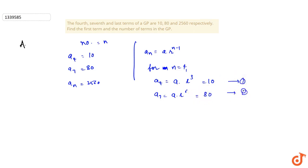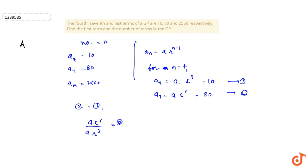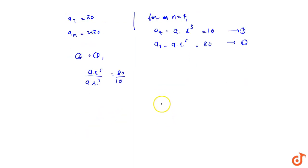Now we have equations 1 and 2. Dividing equation 2 by equation 1, we get a times r to the power 6 divided by a times r to the power 3, equal to 80 divided by 10. This implies r to the power 3 is equal to 8, so the common ratio r is equal to 2.